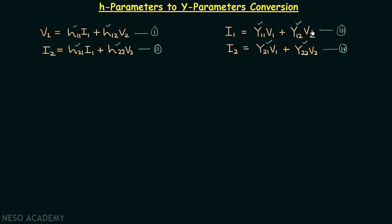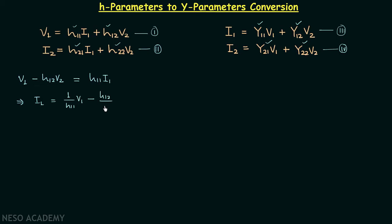In equation 1 we have i1, v1, and v2 as the three variables, and in equation 3 we also have i1, v1, and v2. So it is straightforward to convert equation 1 to the form of equation 3. We subtract h12·v2 from both sides, giving v1 − h12·v2 = h11·i1, and therefore i1 = (1/h11)·v1 − (h12/h11)·v2. Let this be equation number 5.